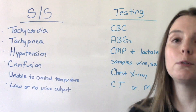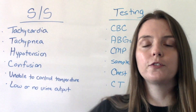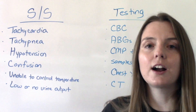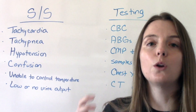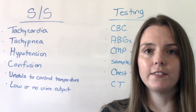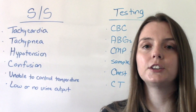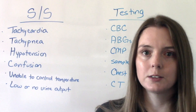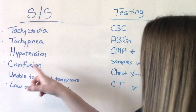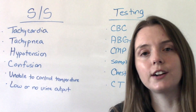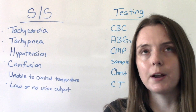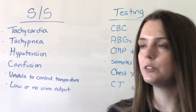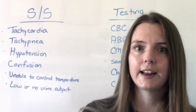They're going to have hypotension. That fluid is being leaked into the surrounding tissues rather than going where it's supposed to, so they're going to have low blood pressure. Because of that low blood pressure, they're not getting enough oxygen and blood to their organs. They might be confused if they're not getting enough oxygen to their brain — they might feel dizzy, lightheaded, confused, or disoriented.